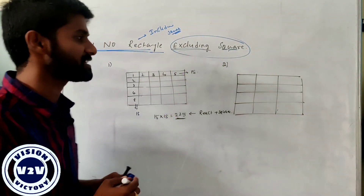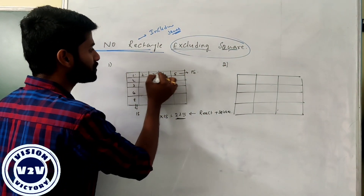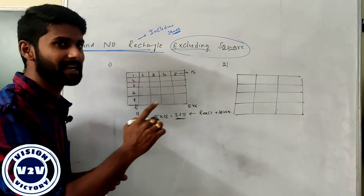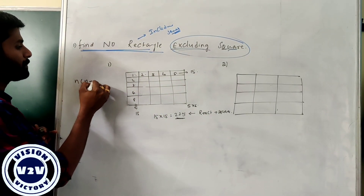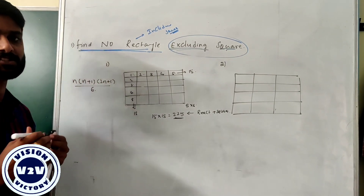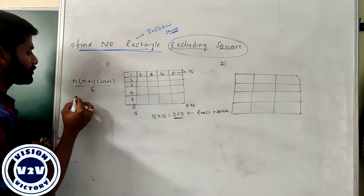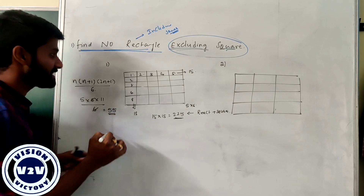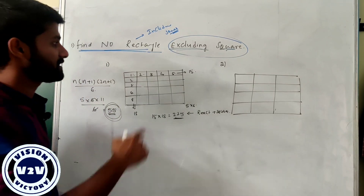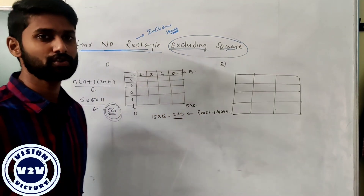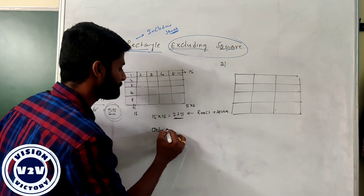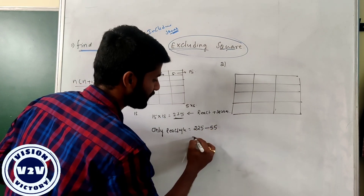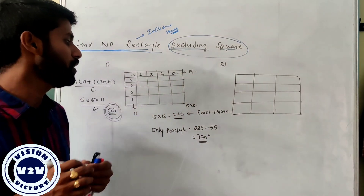But my question asks to exclude squares. For a 5×5 matrix, the number of squares formula is n(n+1)(2n+1)/6. Substituting n=5: 5 into 6 into 11 divided by 6 — the 6 cancels — and the exact number of squares in this box is 55. The total rectangles plus squares equals 225. If you want only rectangles: 225 minus 55 — the total number of rectangles only in this figure is equal to 170.